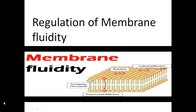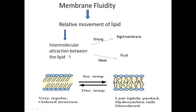Today we will discuss membrane fluidity and the factors which regulate it. Membrane fluidity is determined by the relative movement of lipids, which depends on intermolecular attraction between them. These intermolecular attractions include van der Waals and hydrophobic forces. If these forces are very strong, the membrane is tightly packed and there is no fluidity; if they are weak, the membrane is more fluid in nature.